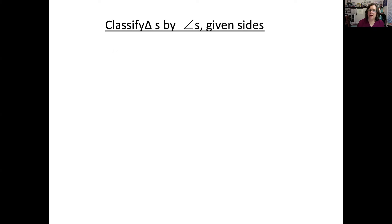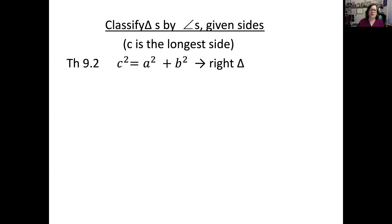Given the sides, we're going to know something about the angles. We use A, B, and C for the lengths of the sides, and it's important that C is the longest side. This is really just the converse of the Pythagorean theorem. I've intentionally put C squared on the left side. Basically this says: if the lengths of the sides satisfy side squared plus side squared equals longest side squared, then it's a right triangle.